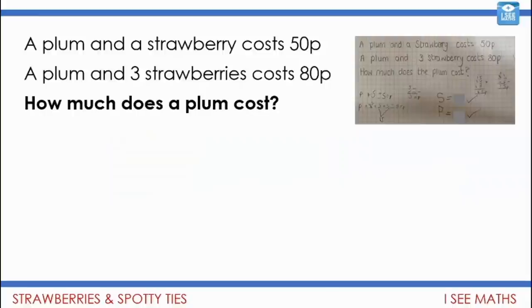Here is one. I've typed out the information just so it's a little bit clearer for you to see. But the question that has been created is this: A plum and a strawberry costs 50p. A plum and three strawberries costs 80p. How much does a plum cost? Now, here's your task. What I want you to do is see if you can spot the mistake.